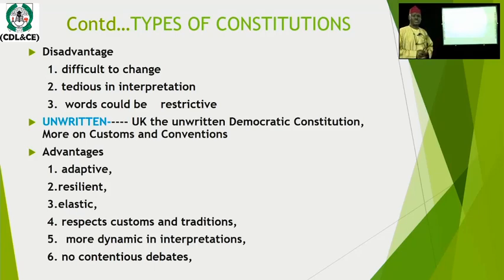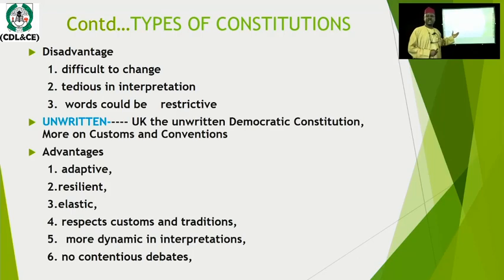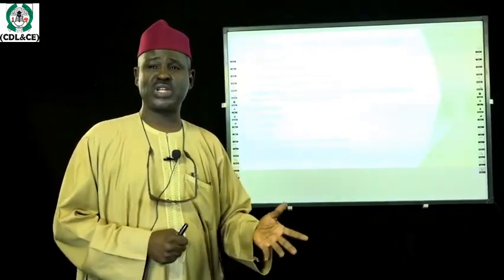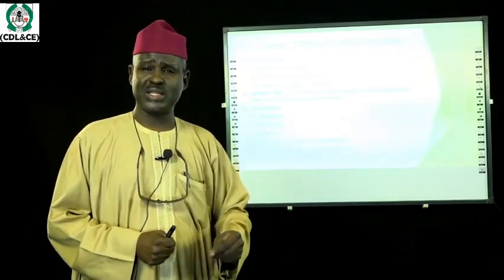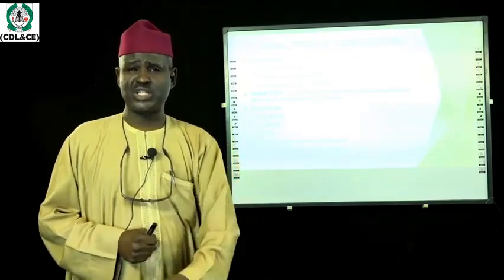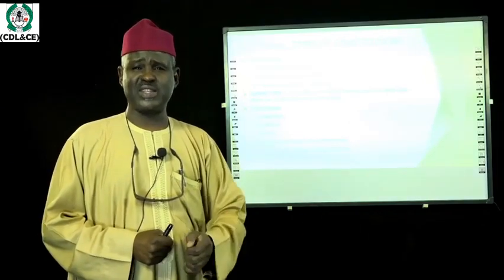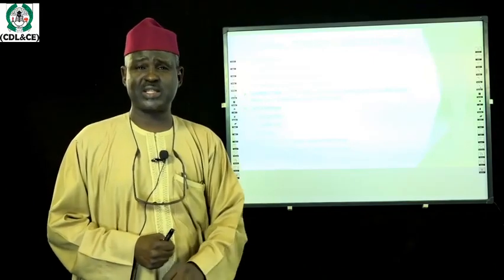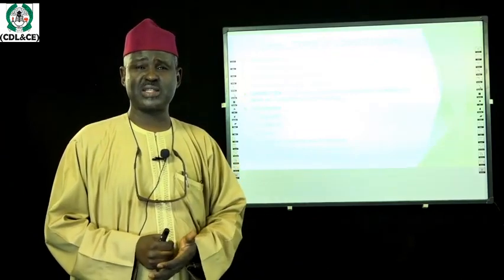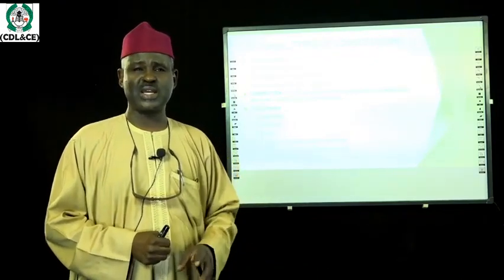The second type of constitution we look at is the unwritten constitution. Not very popular, not very common, but very well known because the United Kingdom operates a democratic unwritten constitution. You cannot go and quote any portion of a constitution to apply laws in the United Kingdom, but they know their constitution. Sometimes it comes to them by convention, by tradition, by precedent. They operate a constitution which is democratic, with separation of power — the executive exists, the parliament exists, and the judiciary exists — though not in a document.